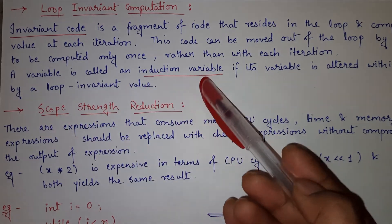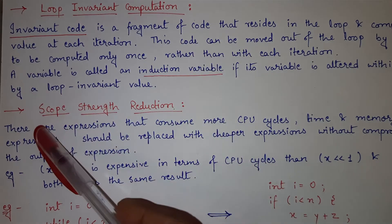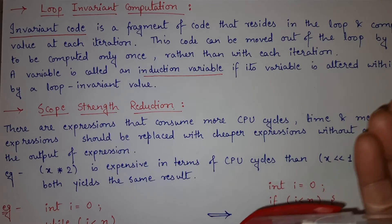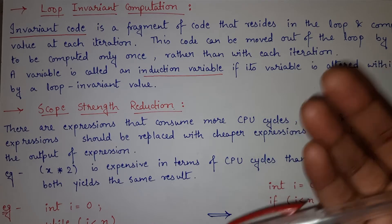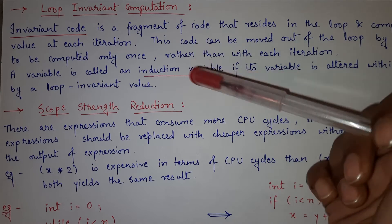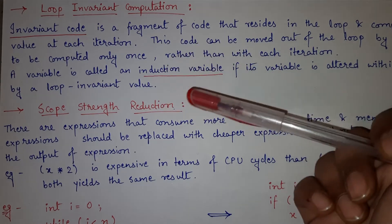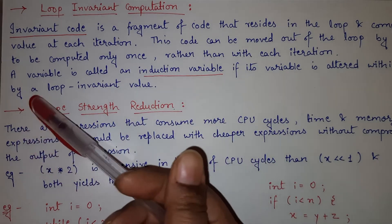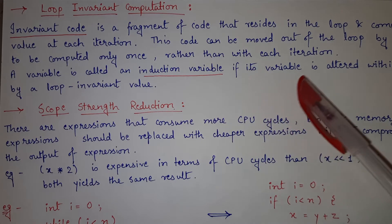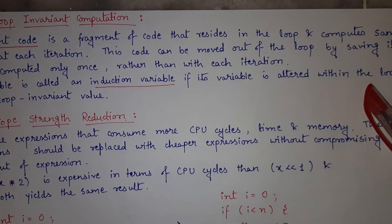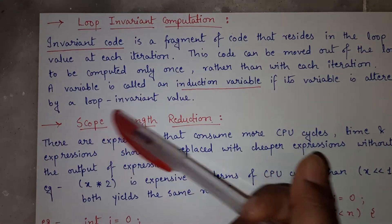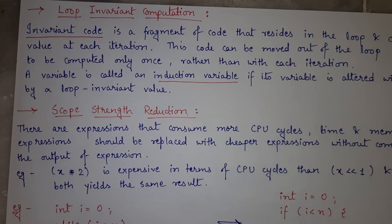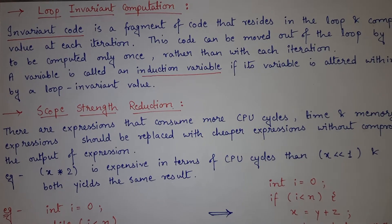Now, what is an induction variable? Invariant code, induction variable, scope, and strength reduction are actually very important terms with respect to your exams — for academics or if you are preparing for any competitive exam like GATE, ISRO, BARC, or any PSU exam. A variable is called an induction variable if its value is altered within the loop by a loop invariant value. So loop invariant computation, invariant code, and induction variable are all related to each other.